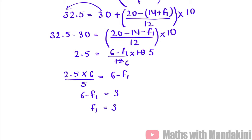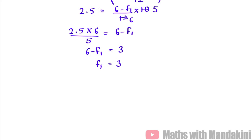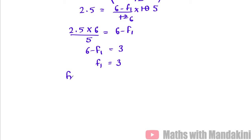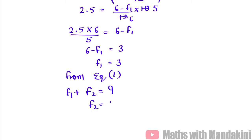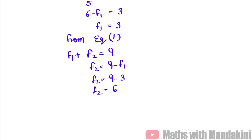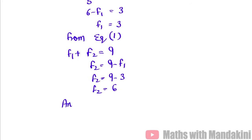Now using equation 1: F1 plus F2 equals 9. Substituting F1 = 3: F2 equals 9 minus 3, so F2 equals 6. Our final answer is F1 = 3 and F2 = 6.